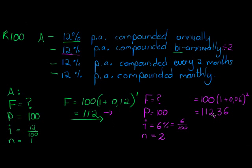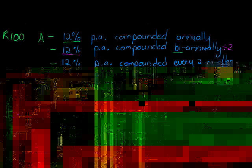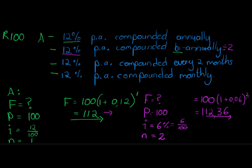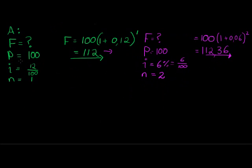Here we earned R12 interest, and here we earned R12.36 — only 36 cents more, but that's on 100 rand. The difference becomes significant when that hundred rand becomes a million rand. Earning it twice in a year gives us more interest, and it makes sense because my interest is earning interest. So will it be better to get it more times in the year? I think you can already guess the answer.